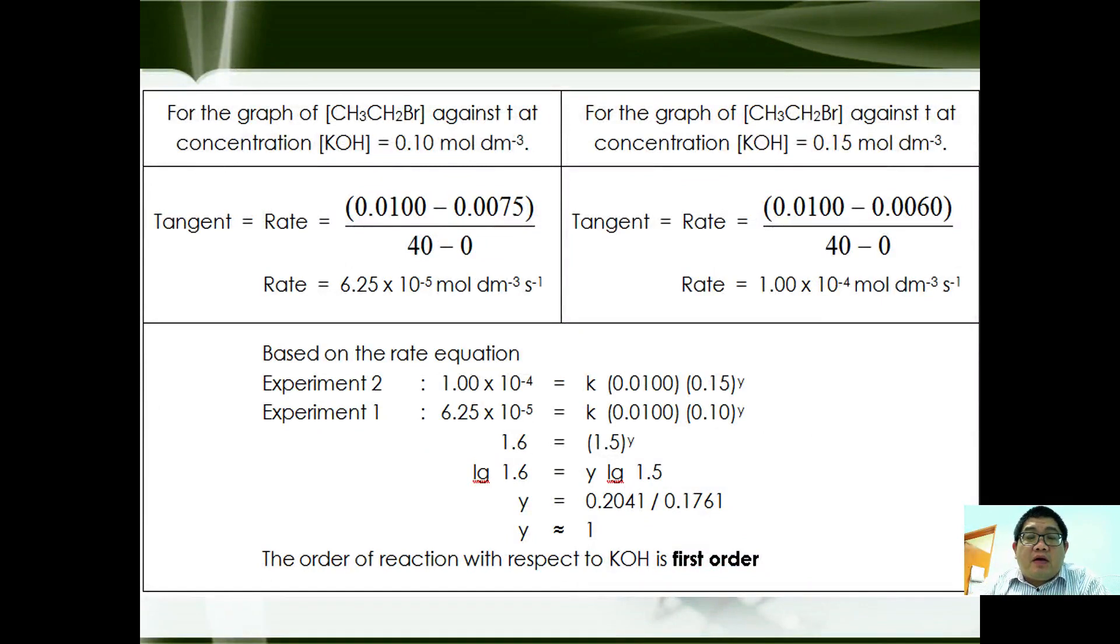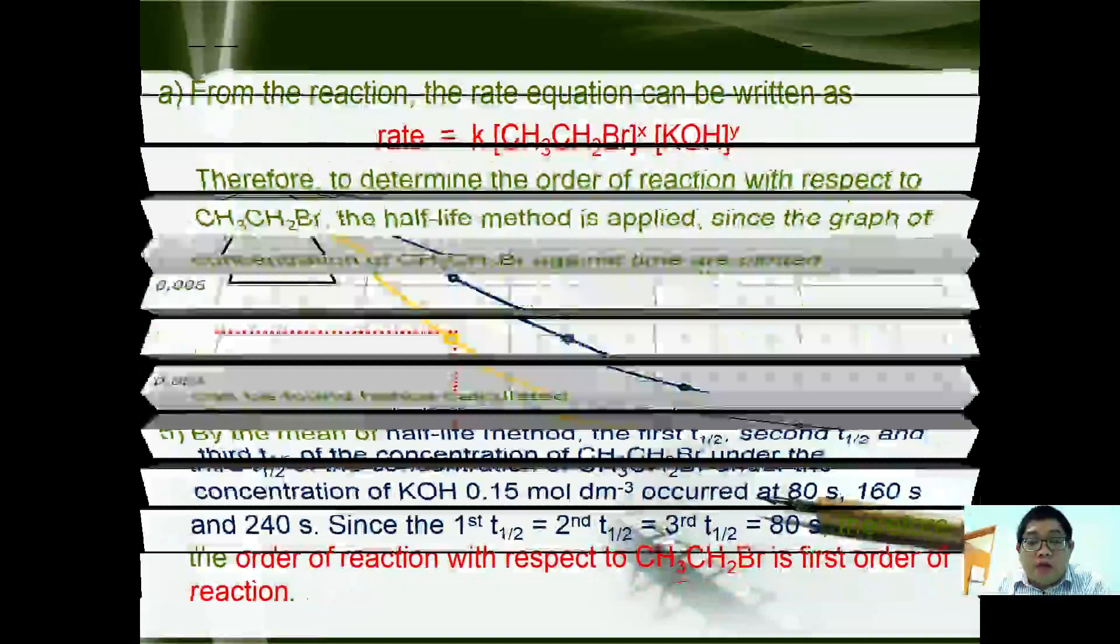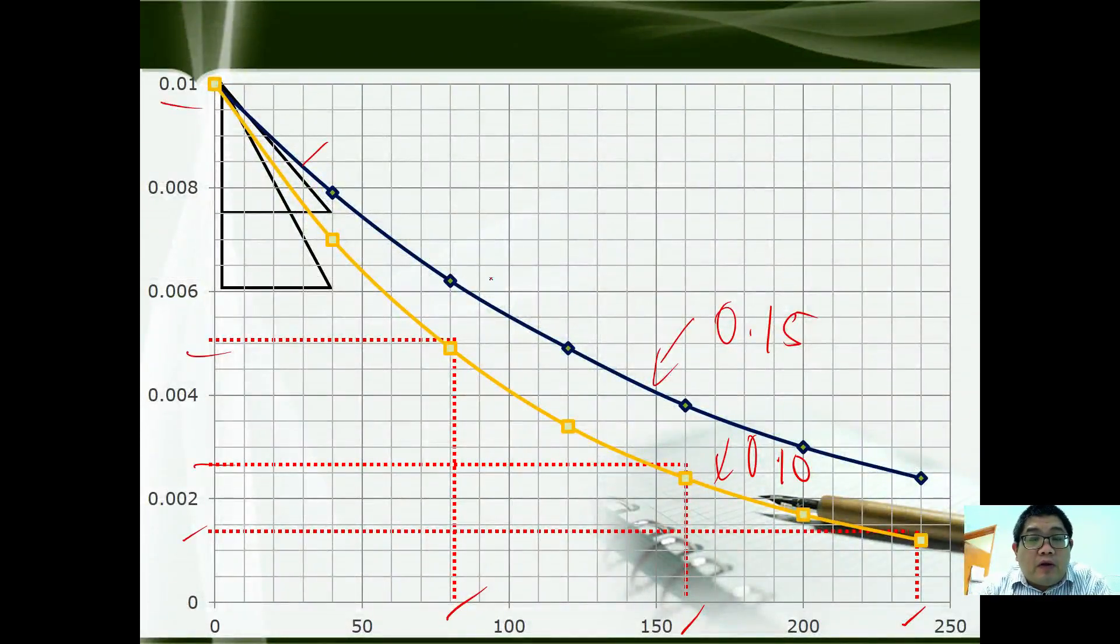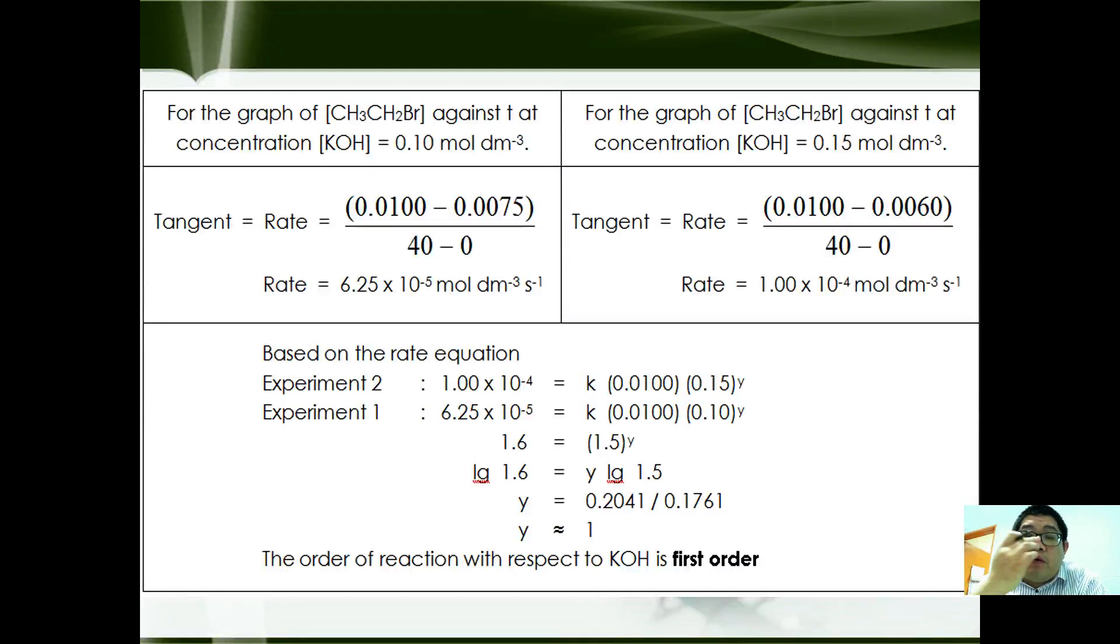In order to determine the order of reaction with respect to KOH, we find the initial rate from the graph. The initial rate is found for both 0.15 and 0.10. We calculate the tangent of the graph where we get rate = 6.25 × 10⁻⁵ for 0.10, and 1.0 × 10⁻⁴ for 0.15. Based on the rate equation, we have 1.0 × 10⁻⁴ = k(0.01)(0.15)ʸ and 6.25 × 10⁻⁵ = k(0.01)(0.10)ʸ. So 1.6 = (1.5)ʸ. Using the log method, log 1.6 = y log 1.5. You get 0.24 over 0.176, approximately equals to 1. Therefore it is first order with respect to potassium hydroxide.